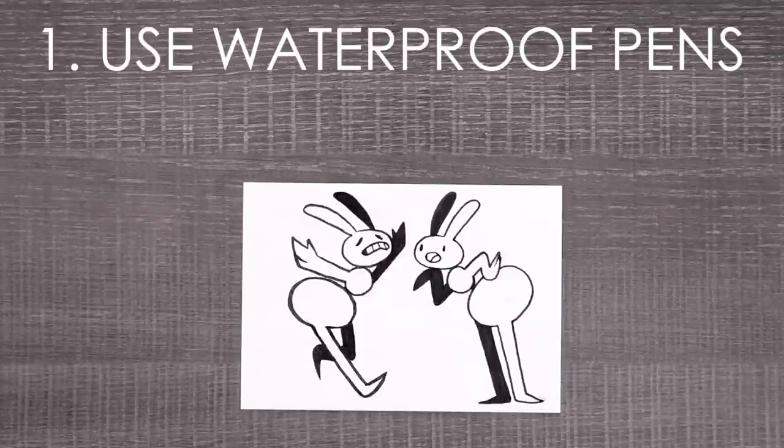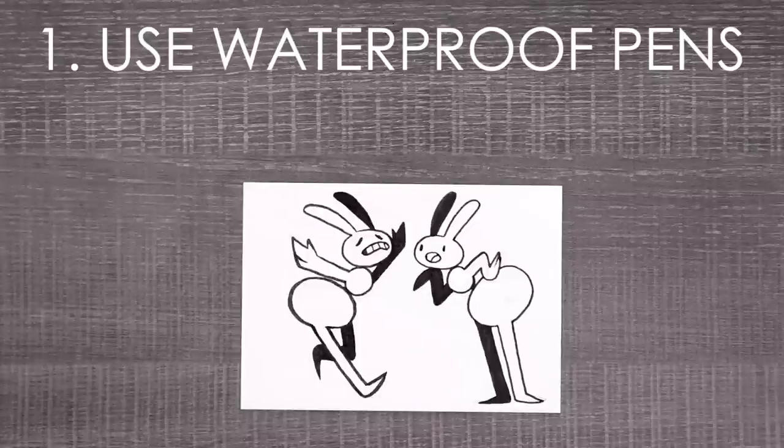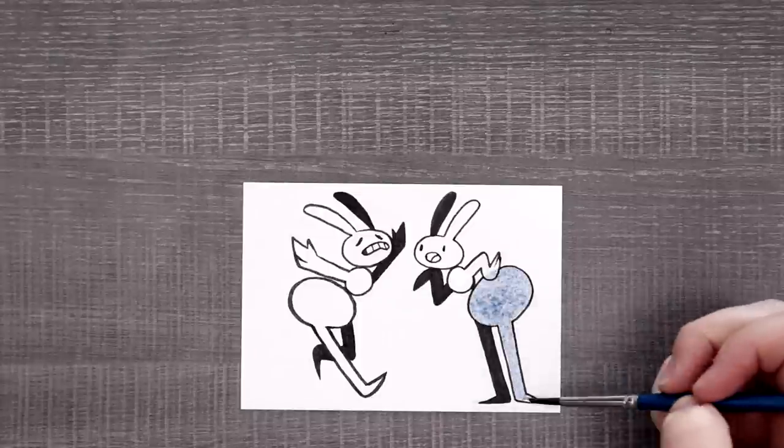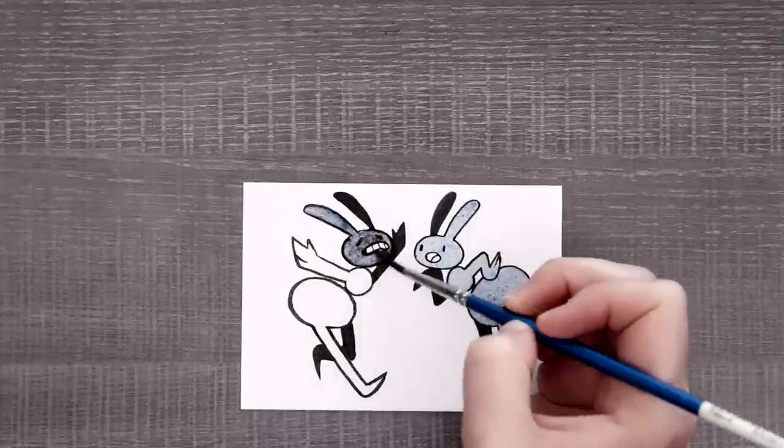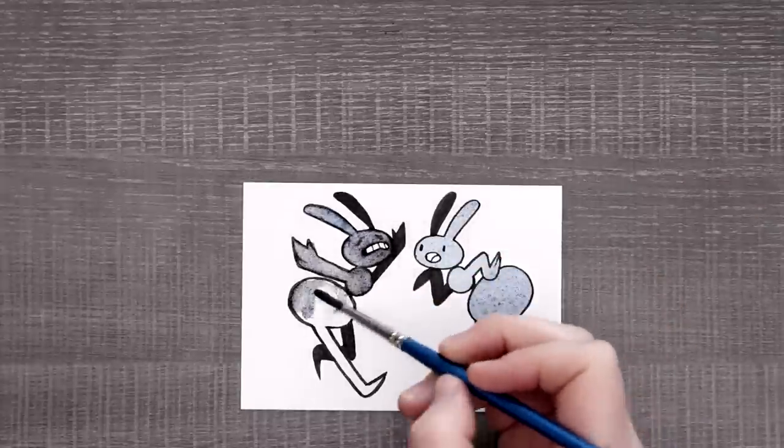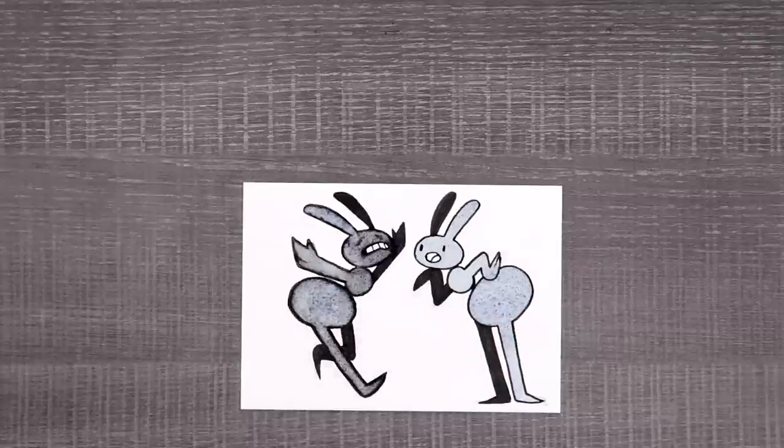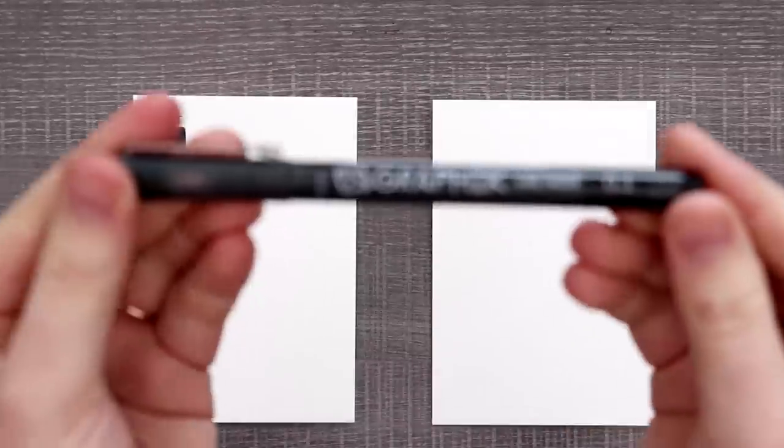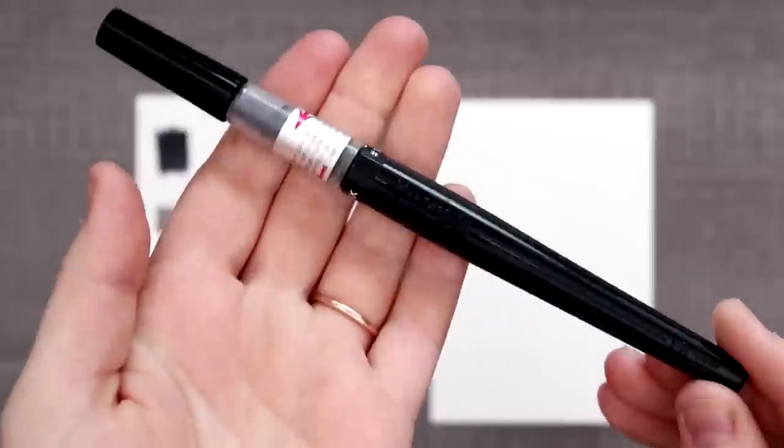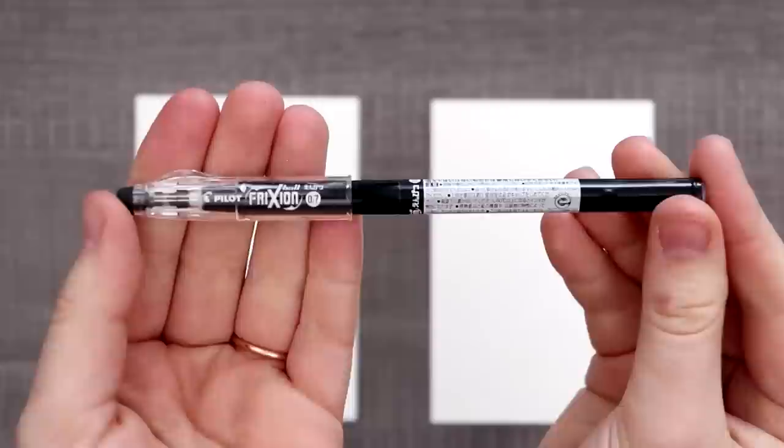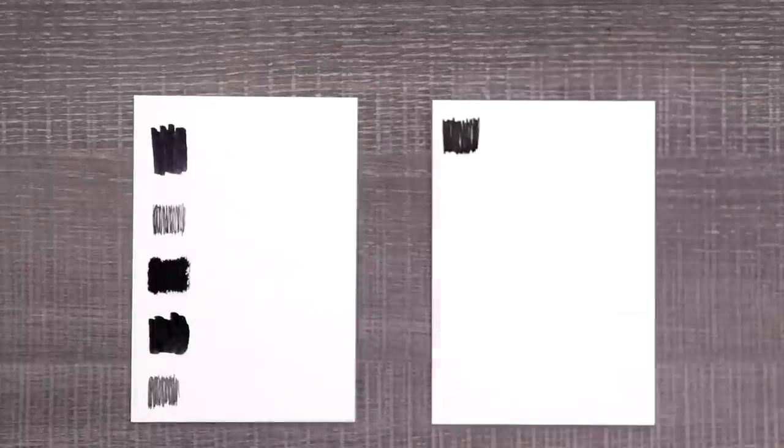Our first tip is to use waterproof pens. The most important part about mixed-media art is making sure your supplies work together. There's nothing worse than using a pen with watercolors that isn't waterproof and watching your whole piece melt away. Thankfully, it's easy to avoid this. Either check your pen to see if it's waterproof or do a simple test. Lay down your ink and put a wash of watercolor over it. It's that easy. If it stays put, you're good to go. If it smears, it's not waterproof.